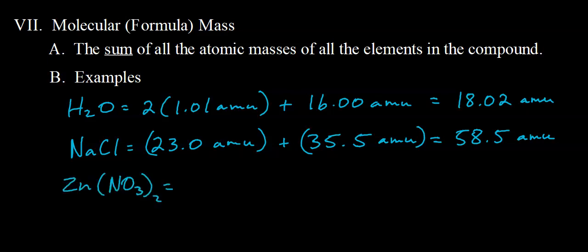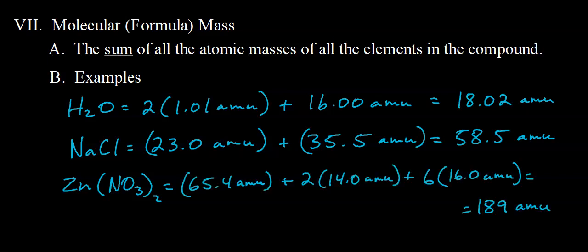Go ahead and calculate the formula mass of zinc nitrate — an ionic compound. Be careful: make sure you account for each atom in that compound. There is one zinc, and there are two nitrates. Each nitrate has one nitrogen, so two nitrates give us two nitrogens. Each nitrate also has three oxygens, and with two nitrates that gives us six oxygens. Add it all up and we get a formula mass of 189 AMU. It is very important that you can calculate masses of compounds.